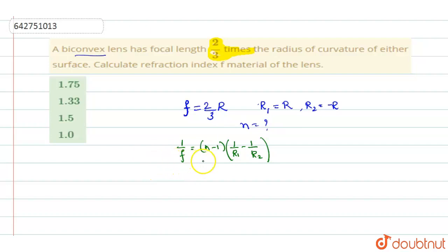In place of f if I have to substitute 2 by 3 r, it comes like 1 over 2 by 3 into r is equal to n is what you have to calculate, into 1 by r plus 1 by r.